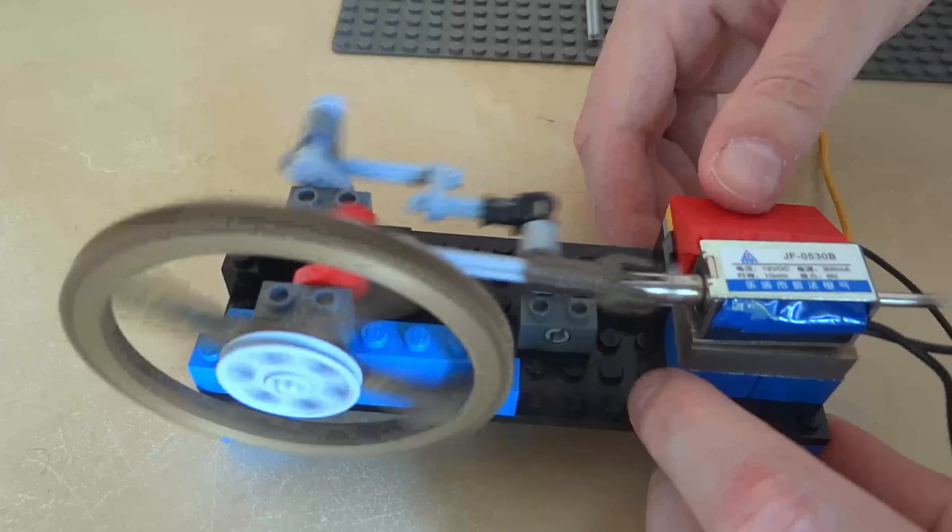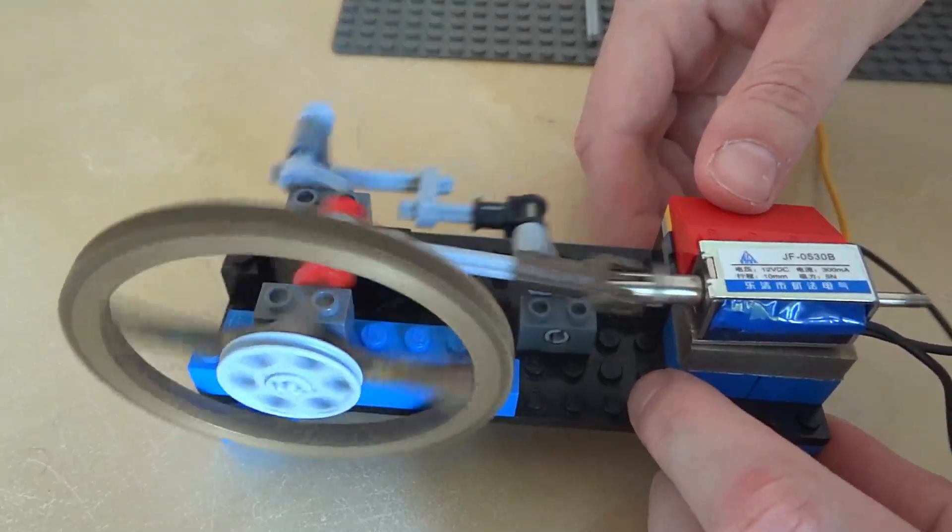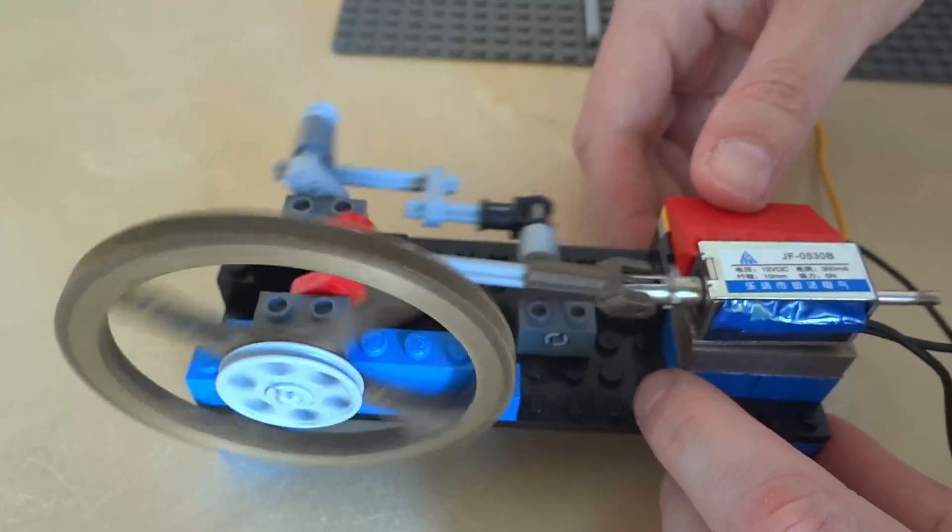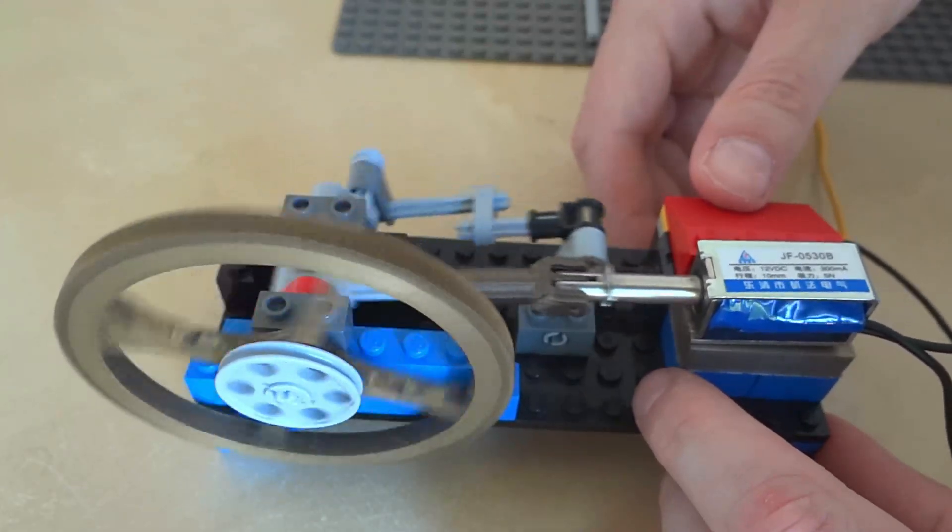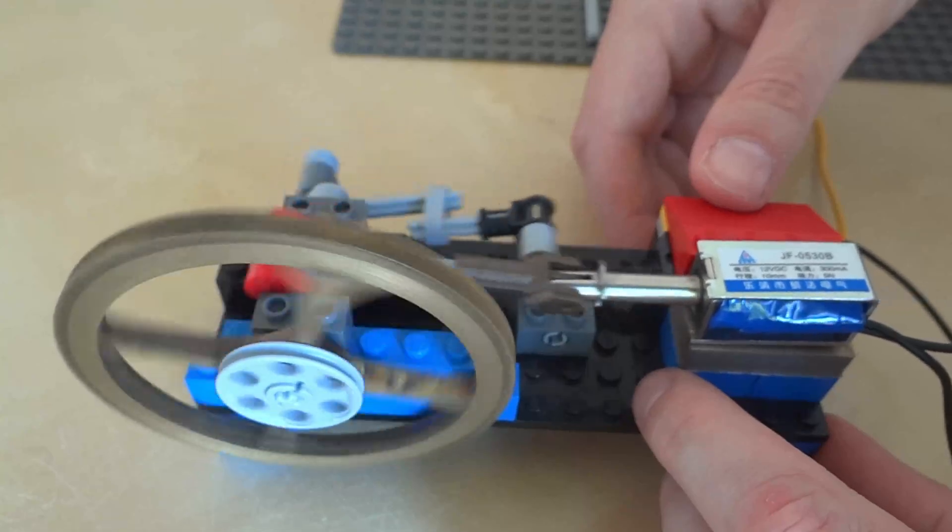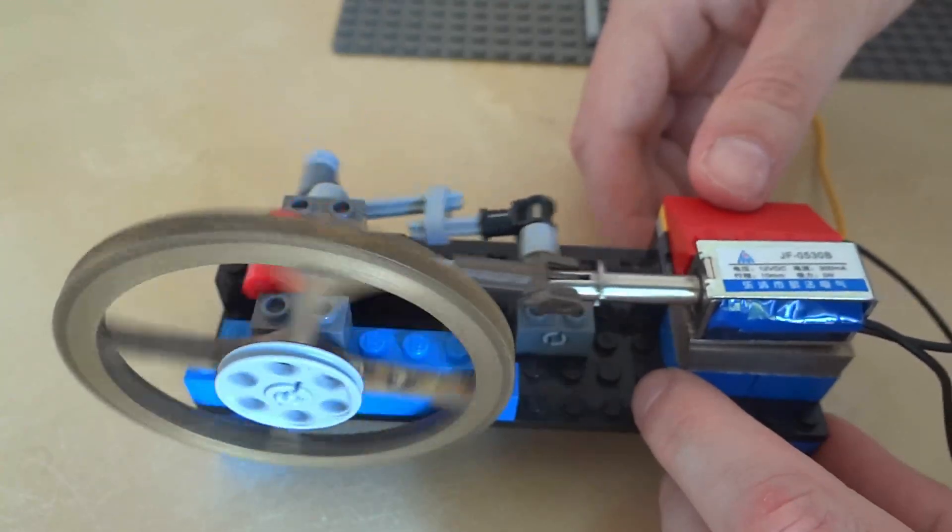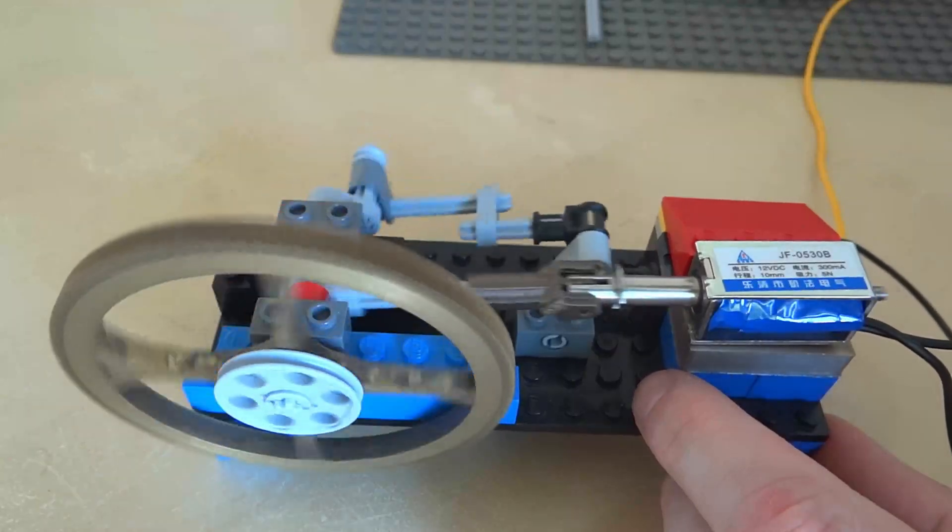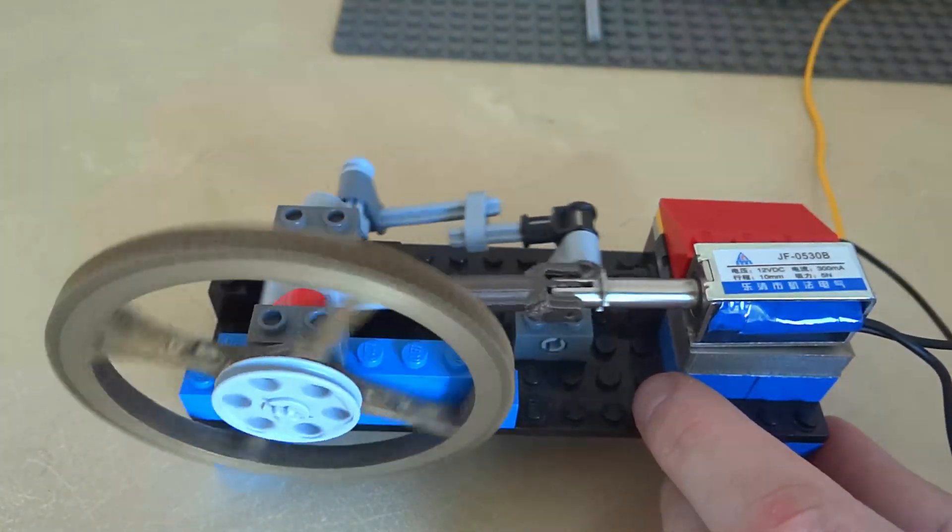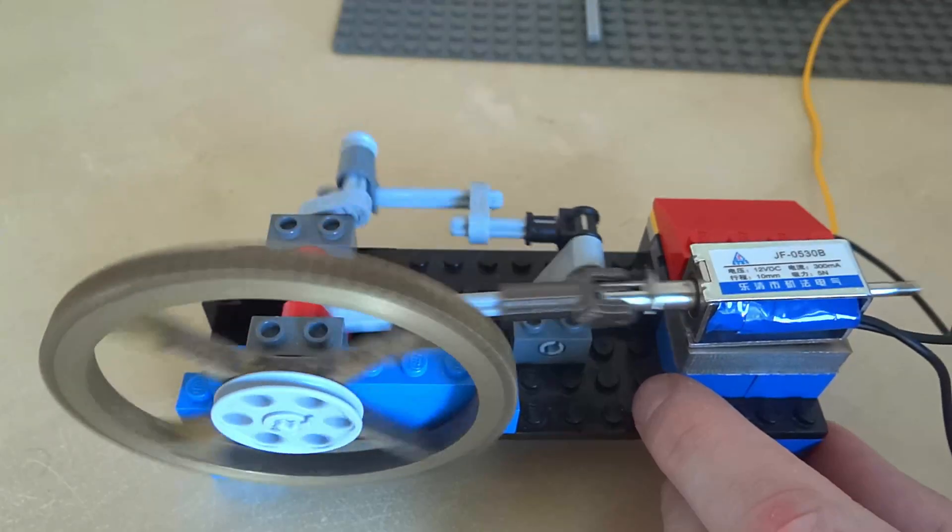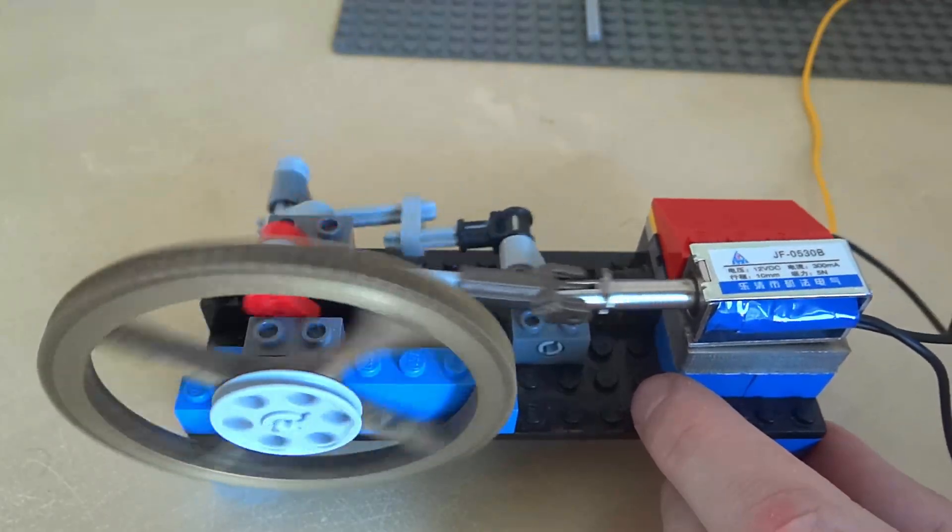After some fiddling around I got it to run okay-ish. It seems the switch I'm using as the valve is not quite up to the task. Still, this engine is currently running at only 12 volts, pulling around 300 to 400 milliamps, which is actually very little power. It definitely needs improvement however. I'm sure it can run a lot better.